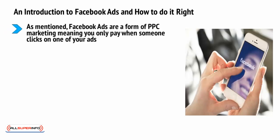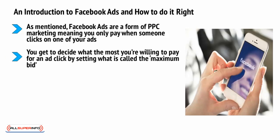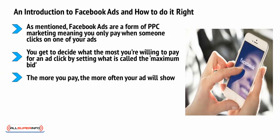Let's start with Facebook Ads. Facebook Ads are a form of PPC marketing, meaning you only pay when someone clicks on one of your ads. Facebook Ads will appear on Facebook, giving you the opportunity to advertise to anyone who uses the social media platform. You get to decide the most you're willing to pay for an ad click by setting the maximum bid. Each time two ads are suitable for a single position, they will enter into an automated bidding war, and if your maximum bid is highest, your ad will show. The more you pay, the more often your ad will show.